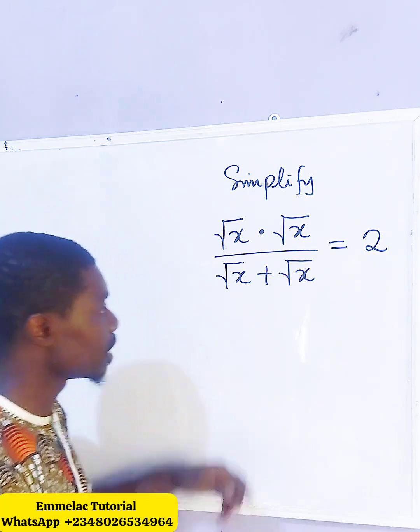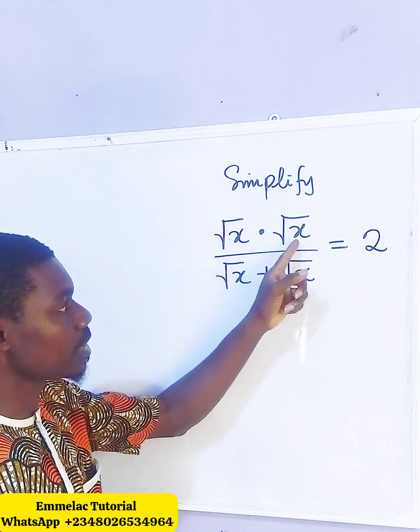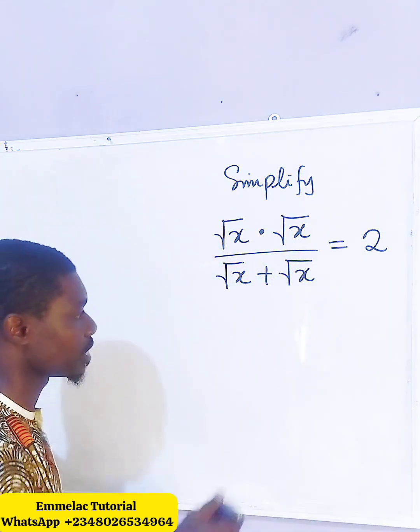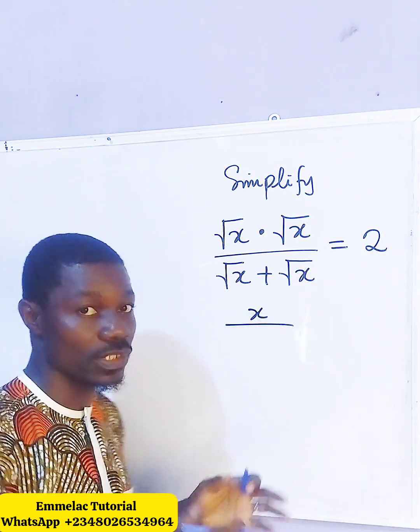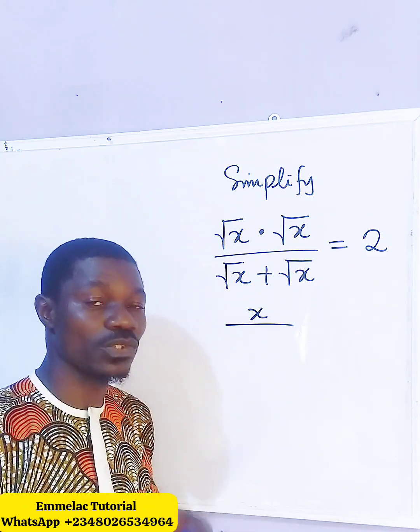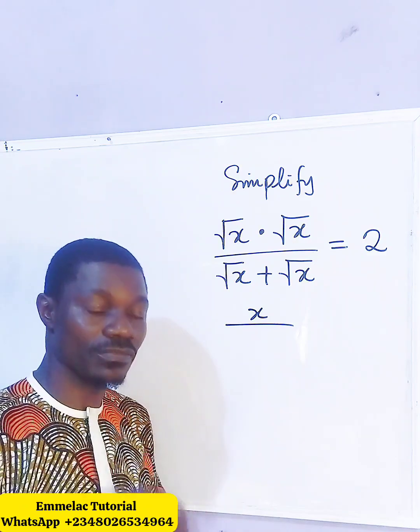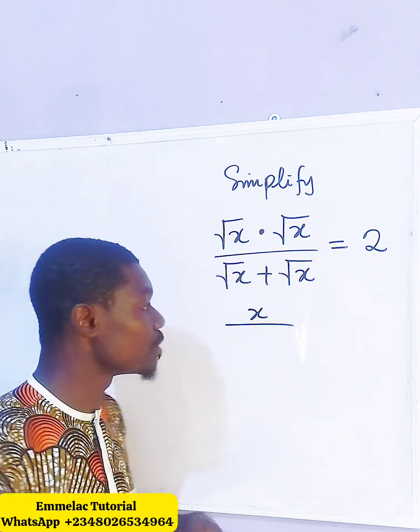First of all, let us know that the square root of x multiplied by the square root of x will give us x. And that is applicable to any number. So the square root of any number multiplied by the square root of the same number, the value is that same number.